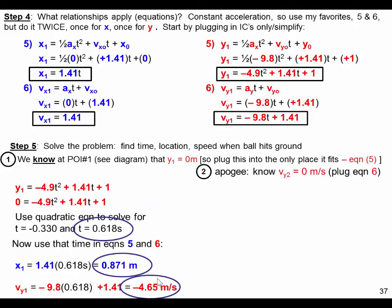Let's take a look at the second question. What about the apogee? Well, at the apogee, we know that our velocity, upward velocity, drops to 0 at the apogee, then turns around and starts moving back downward. So we're going to plug 0 into the only place it fits. This is a velocity, and here's our velocity. We're going to plug it right into here.